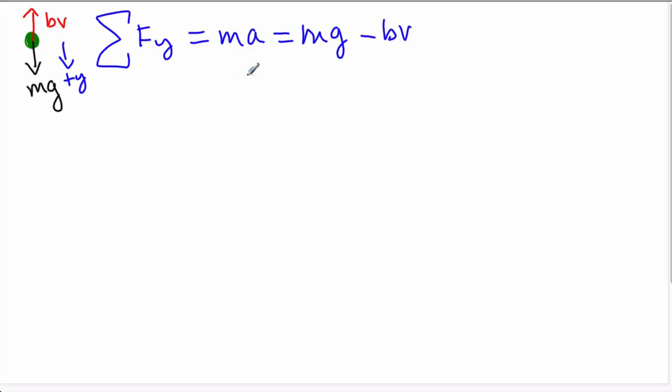So the goal here is to find an expression for velocity. We need to remember that acceleration is dv/dt. We're going to use that to our advantage. So m times dv/dt now equals mg minus bv.